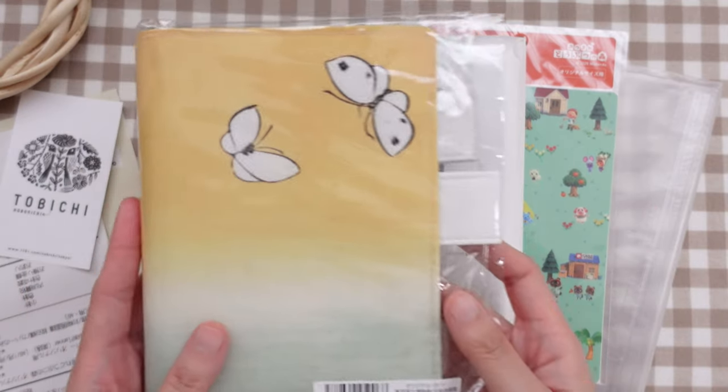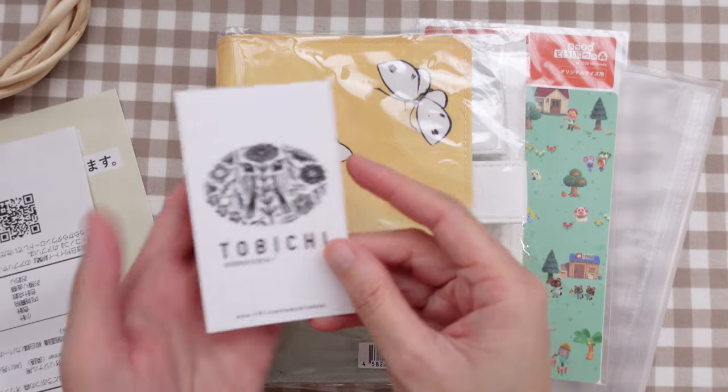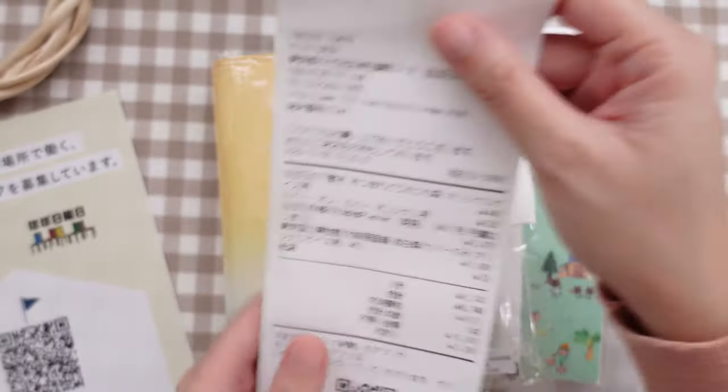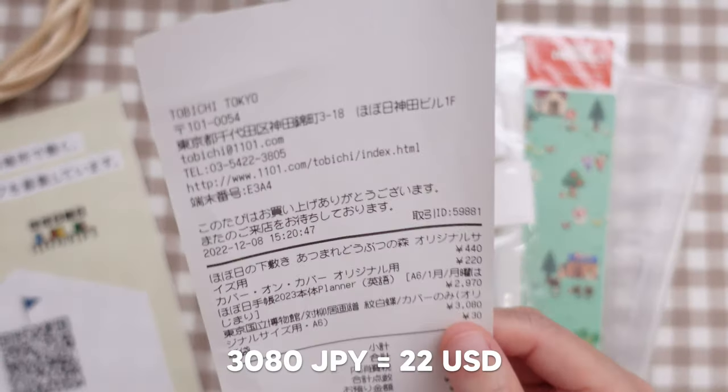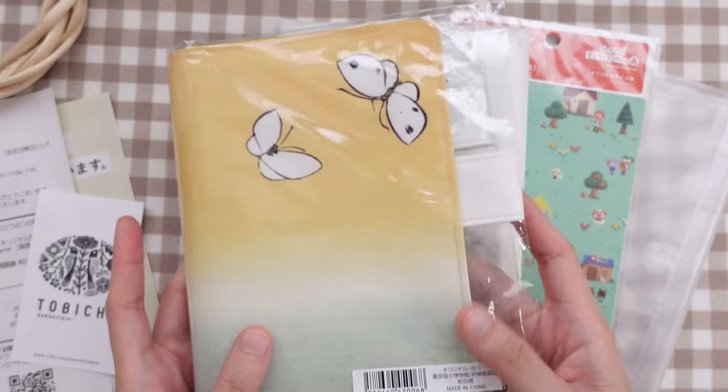This will be my very first time using a Hobonichi Techo planner, so I'm very excited. So first, let's start with this cover. I bought this at the actual Hobonichi store here in Tokyo, which is called Tobichi. I have the receipt right here. So I got this cover for 3,000 yen.